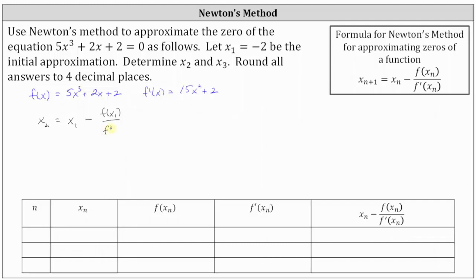In this case, we know x one is negative two, and therefore x two is equal to negative two minus f of negative two divided by f prime of negative two. For x three, n is equal to two, since two plus one is three. So x three is equal to x two minus f of x two divided by f prime of x two.